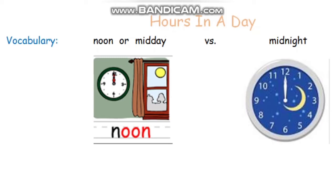Today we're talking about hours in the day and we have some vocabulary to think about. You have noon or midday — notice that at that time the little hand and the big hand are both pointing at 12, and we call it noon or midday. The sun is out; it's the middle of the day.